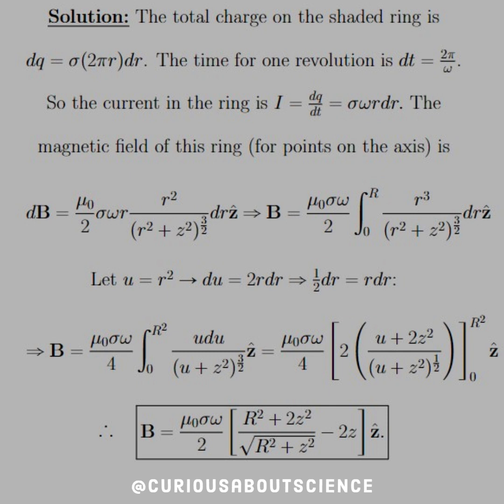Notice here that the limits change because if I plug in capital R for u, I get capital R squared. Zero, I get zero. So we don't have to resubstitute back in after.